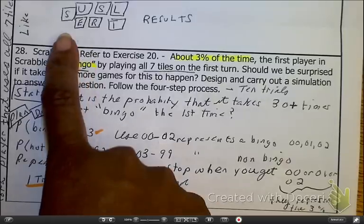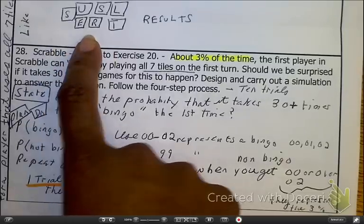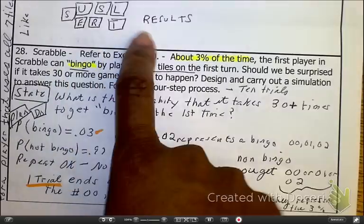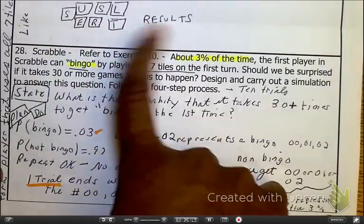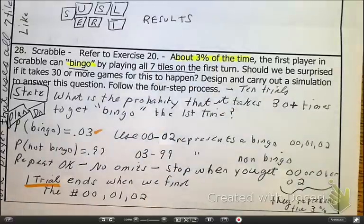Right here, as I look at this, I just gave myself seven tiles. But when I organize them, I get the word results. If those are the seven tiles that I got, I would have what's called a bingo. So that's what that is.